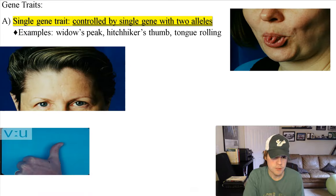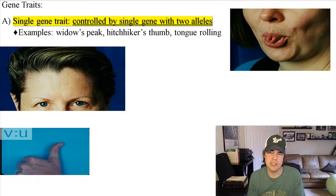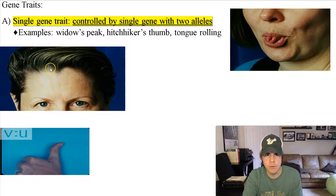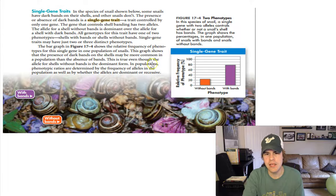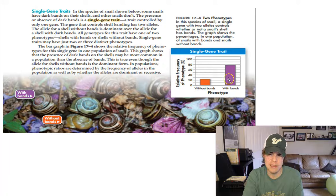Single gene traits are controlled by a single gene with just two alleles — Mendelian genetics. Examples in humans include tongue rolling, widow's peak, and hitchhiker's thumb. These snails here show a single gene with two alleles controlling whether or not a snail's shell has bands. In this population, banded shells are far more prevalent than unbanded ones.